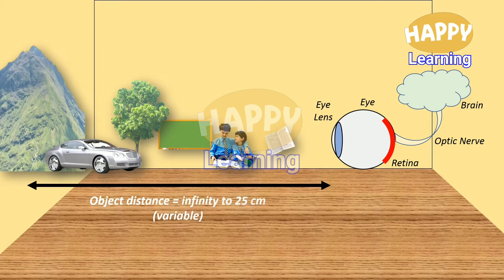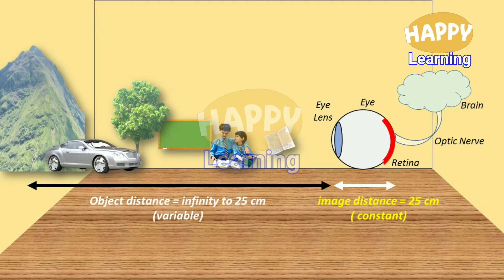In general, the human eye is able to see many objects like hills, vehicles, trees, blackboard, the persons besides us, the newspaper in our hands, and so on. The object distance is any value from infinity to 25 centimeters — it is a variable. Whereas the image distance from the eye lens to the retina equals 2.5 centimeters, which is a constant value.